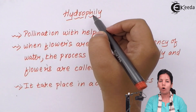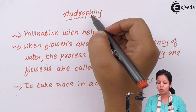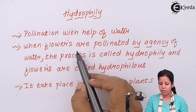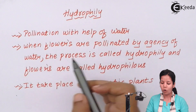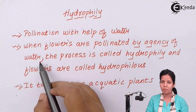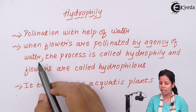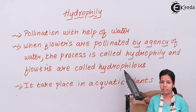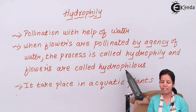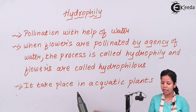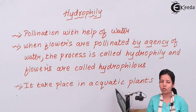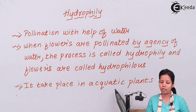For hydrophily or water pollination to occur, the flowers are pollinated by the agency of water — this process is called hydrophily — whereas the flowers which are pollinated through this process are called hydrophilous flowers. It is a process that takes place in aquatic or submerged plants.